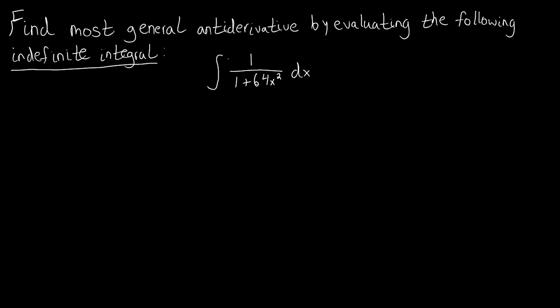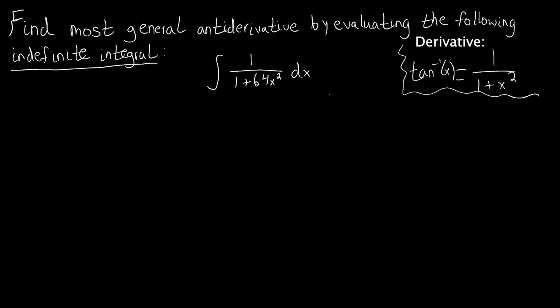As I look at this type of function, I see that it vaguely looks like the form of the derivative of tangent inverse of x. The reason I say vaguely is because in order to have tangent inverse of x, the argument of tangent inverse needs to be squared. We almost have that, but we also have this 64 times x squared, so it's not by itself.